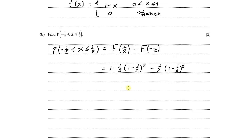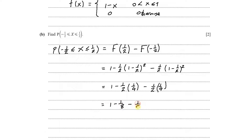Simplifying: that's 1 minus one half of (one half) squared, which is one quarter — so 1 minus one eighth — and minus one half of (one half) squared, which is one quarter — so minus one eighth. Therefore, 1 minus one eighth minus one eighth gives us three quarters. Three quarters is the final answer for part B.